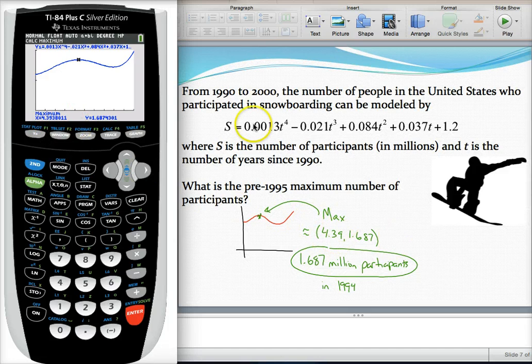So there's that coordinate I found here. What this means, if they want the maximum number of participants, that's my y value. So about 1.687 million participants.